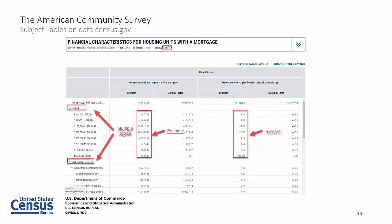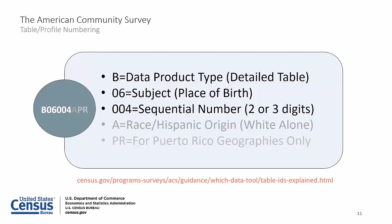It's helpful to look at the table numbering that helps identify what the table is about. There are five elements. The first element is a letter — B for detailed table, also called base tables. The second element is two numbers indicating the subject, such as 06 for place of birth. The next two or three digits give the table number within that subject. There may be a letter after the third element — A through I for race-iterated tables, where A stands for white alone. Tables may also have PR at the end for tables available in the Puerto Rico Community Survey.